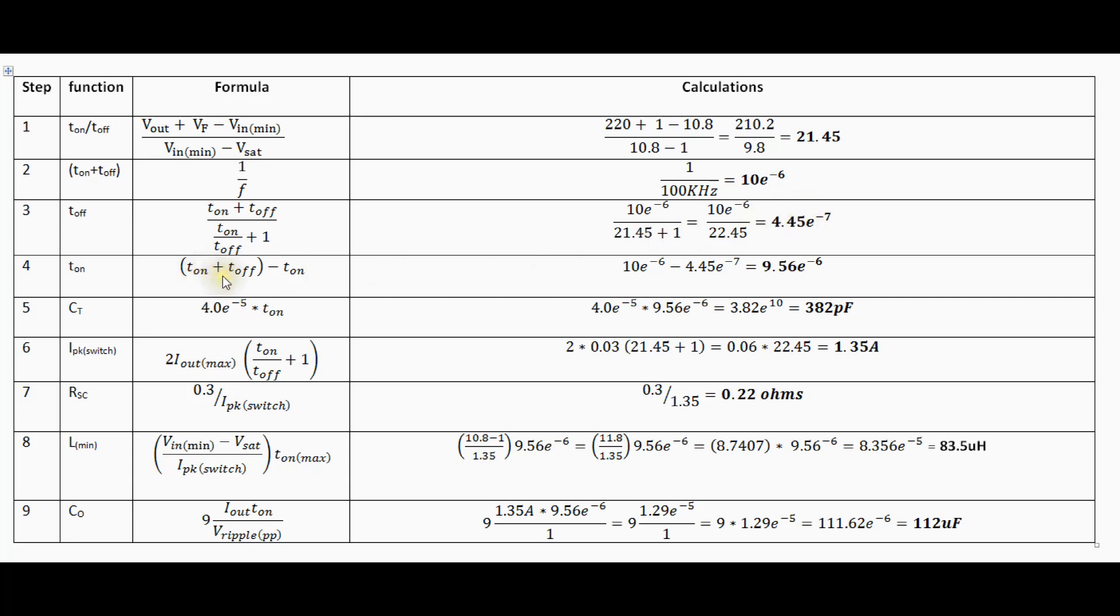And again here you know you've just calculated actually there's a mistake that should say I think tOff you can see that the value you put there is 4.45e to the minus 7 which is that one there which is the answer for tOff. So I've obviously made a mistake I might type that on that should say off. I'll have to correct that at some point.